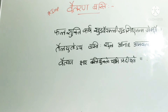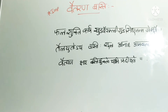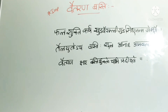Vaitarana Kshara Basti yukto chapi pradiyate — this is the explanation of the third line. The reference of this Vaitarana Basti is Chakradatta, Niruhaadhikara.